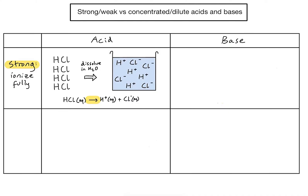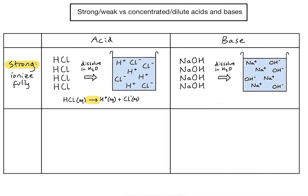Let's take sodium hydroxide, which is an ionic compound, as an example. Taking four of those sodium hydroxide units and dissolving them in water, each one ionises in solution to form Na⁺ ions and hydroxide ions. Because they have all dissociated or ionised, sodium hydroxide is defined as a strong base. To represent that in a chemical equation, similar to the first example, we again have a one-directional arrow, indicating that all of those sodium hydroxides are going to ionise when dissolved in water.